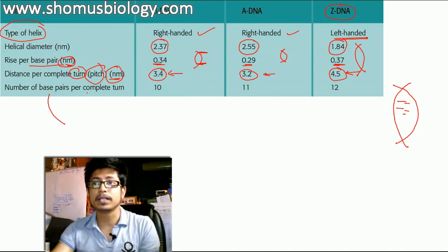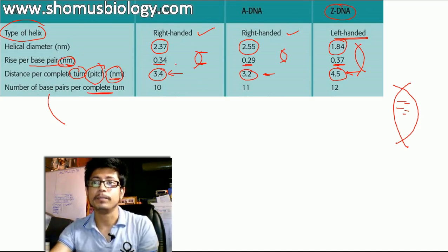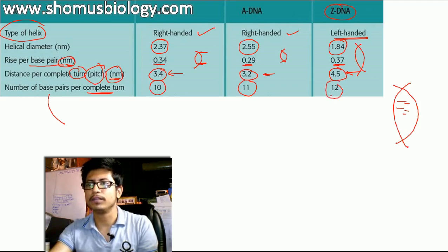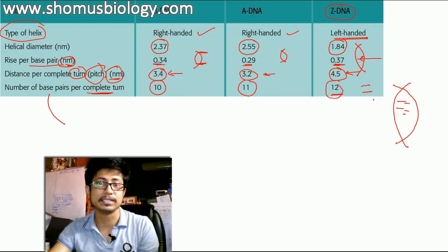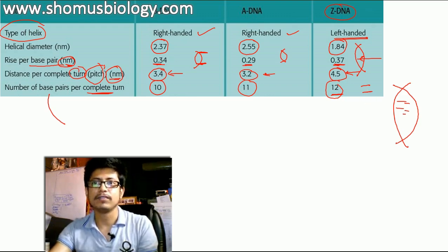Number of base pairs per complete turn, in case of B DNA it is 10 bases per turn, A DNA 11 base pairs per turn, and Z DNA 12 base pairs per turn, which we can find out from this rise as well, because those bases are distantly placed and per turn carries more bases.